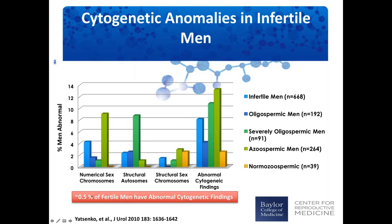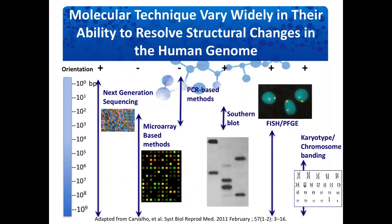Just to remind you, about half a percent of fertile men have abnormal cytogenetic findings, whereas for some pathologies, between 9 and even about 13 percent of azoospermic men have increased incidences of chromosomal anomalies. This is a very significant increase when compared to fertile men. I'm going to focus my talk today on structural chromosomal abnormalities.